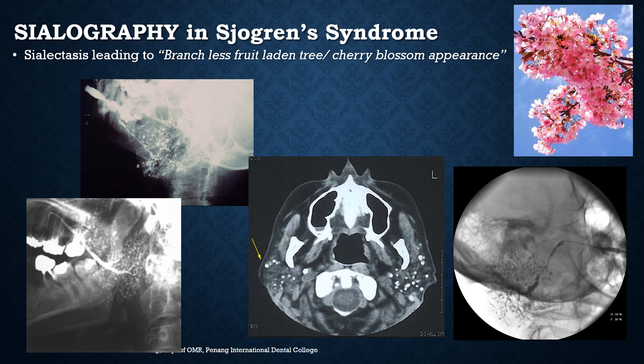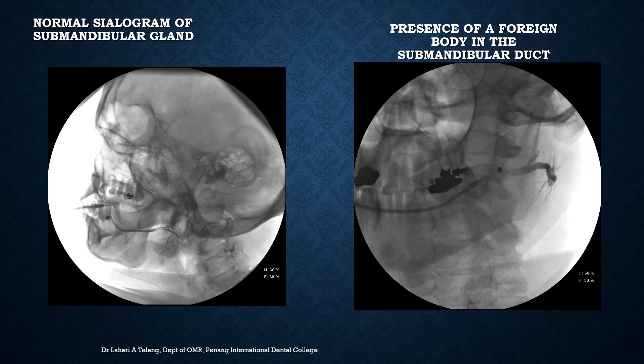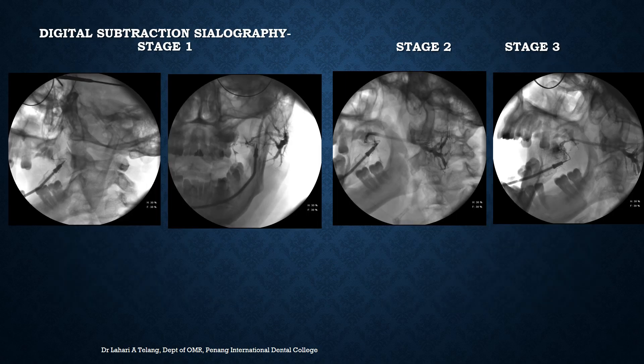After injecting the dye, various methods of imaging can be performed to view the effects of the dye in the ductal system. The normal appearance on a sialogram of the submandibular salivary gland shows the leafless tree appearance — the duct, its entire ductal system, and branches. When digital subtraction sialography is performed, you can observe the stages of dye slowly filling and then completely filling the ductal system.